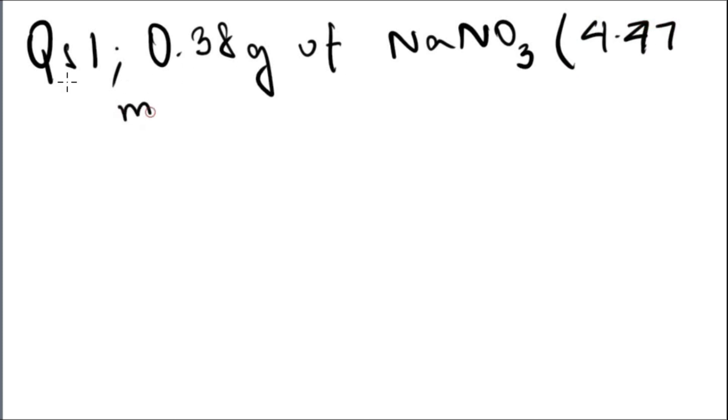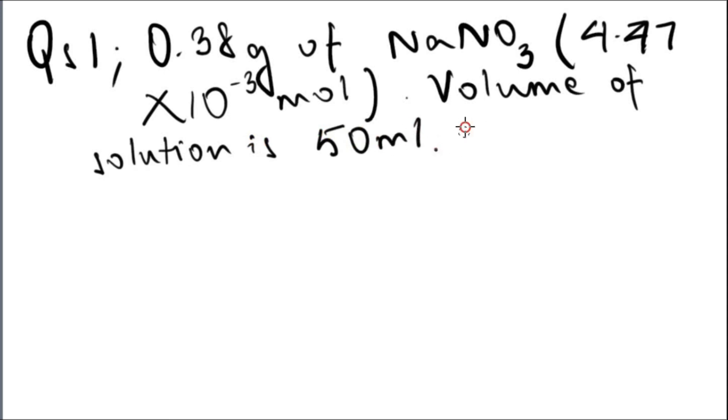Now we'll move on to the homework. So question one is a calculation. 0.38 grams of sodium nitrate is used, which is equal to 4.47 times 10 to the power minus 3 moles. Now the volume of the solution is 50 milliliters, so please find the molarity of sodium nitrate.